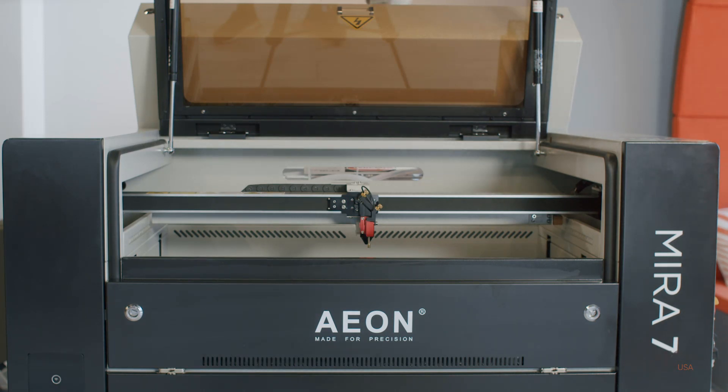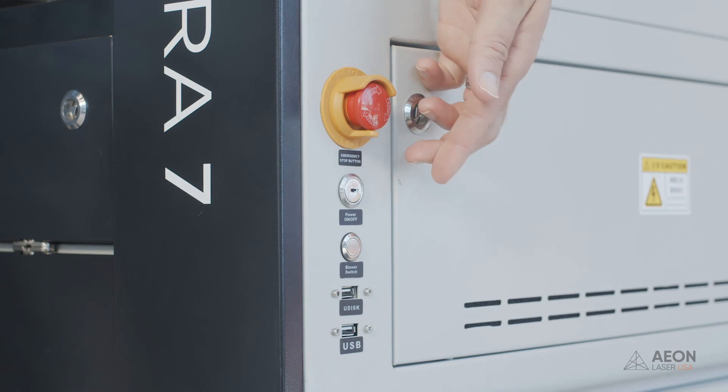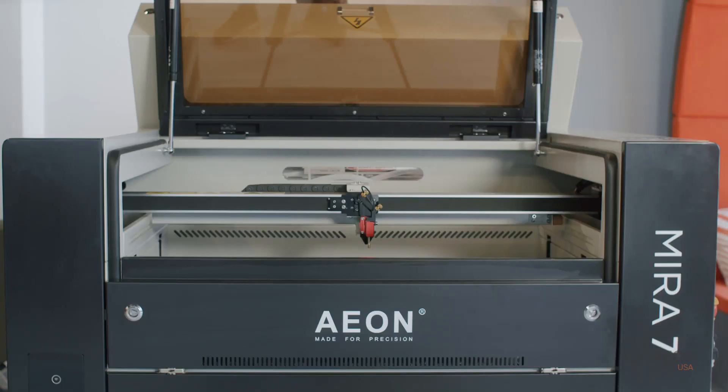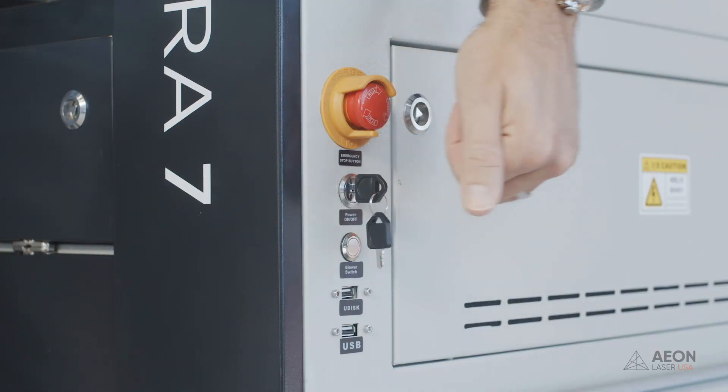Before we turn the ignition on, we'll want to make sure the emergency stop button is not pushed in. To disengage it, we will turn the emergency stop button clockwise and it should pop out. All that's left to do is to turn the ignition on and turn the key counterclockwise about a quarter turn.